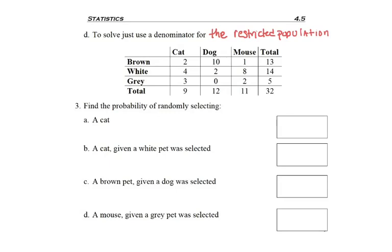We're asked to find the probability of selecting a cat. So one item, and if you remember, we find all of the ways this could happen out of everything that's possible. We're going to divide the nine cats by the 32 pets to get 28.1% probability of randomly selecting just a cat.